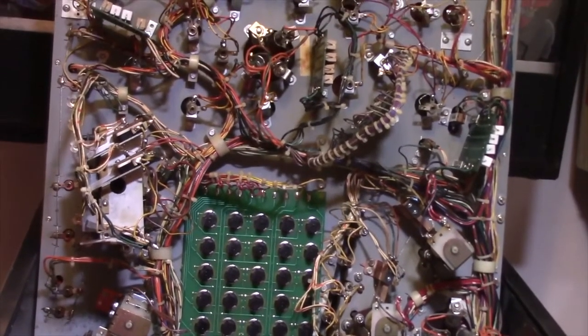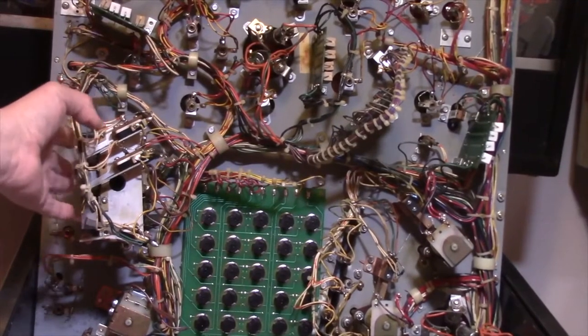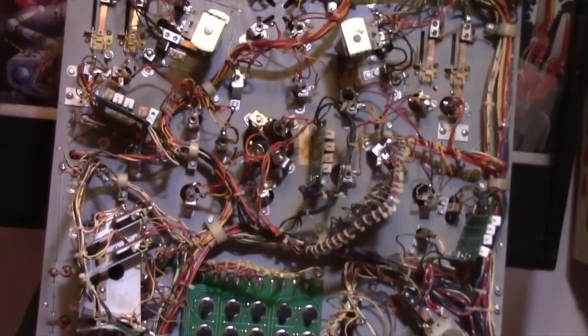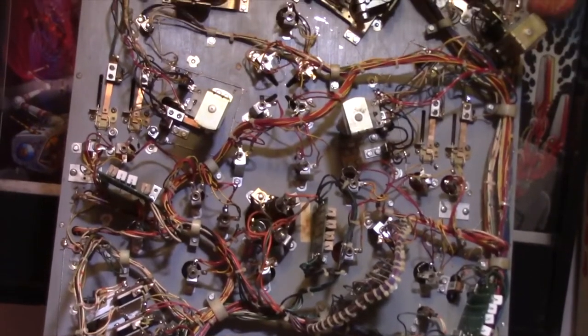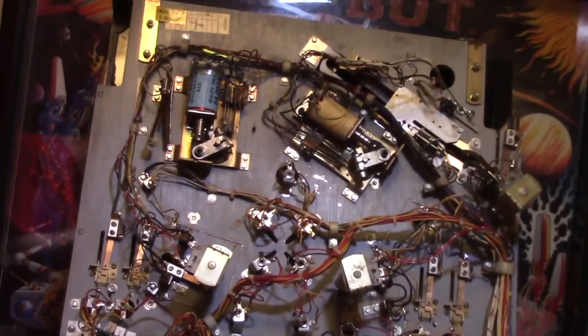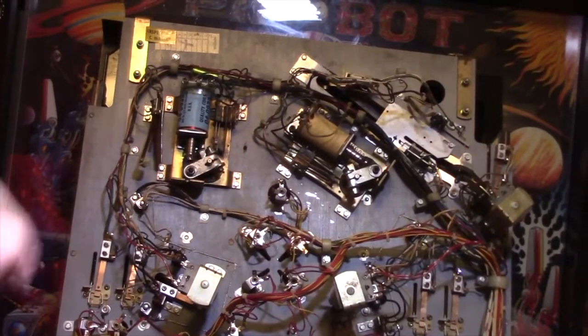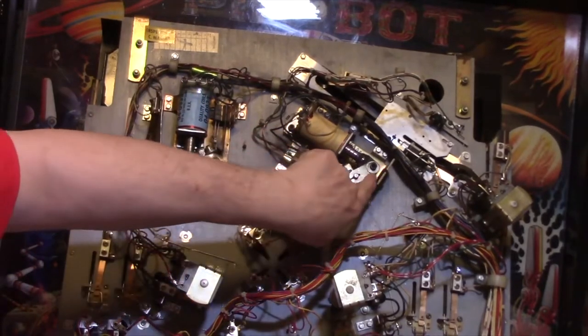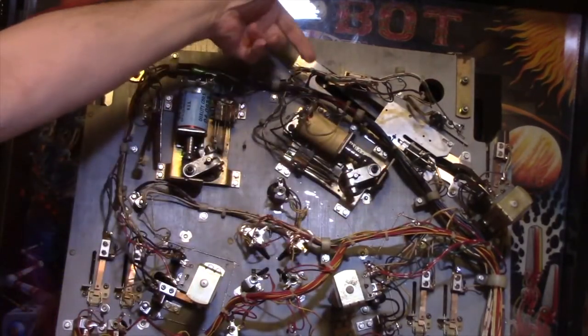And of course, over here we have the drop target controller, nice and neatly wired, hand wired, good old days. There's the solenoid, it's for the flippers and that's the ball ejector if it falls down.